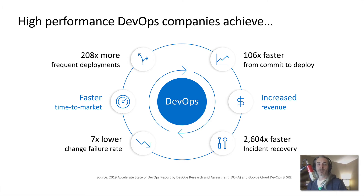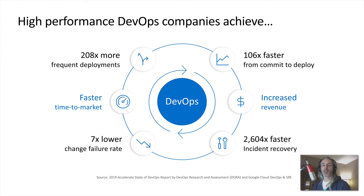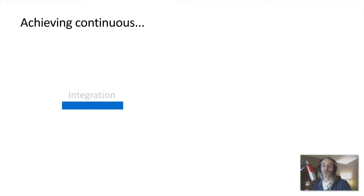These are real numbers: we see an increase in deployment frequency and time between commit and deployment, but also check out the bottom row — seven times lower change failure rate and over 2,600 times faster incident recovery. DevOps is huge and perhaps key to running the most reliable systems possible.